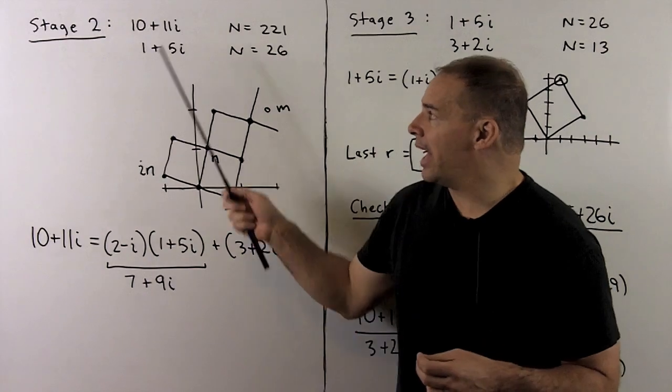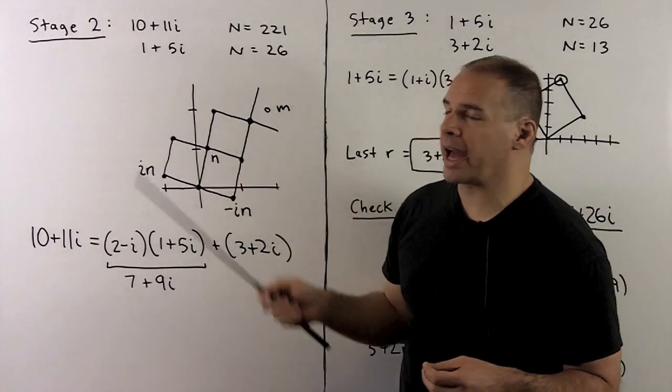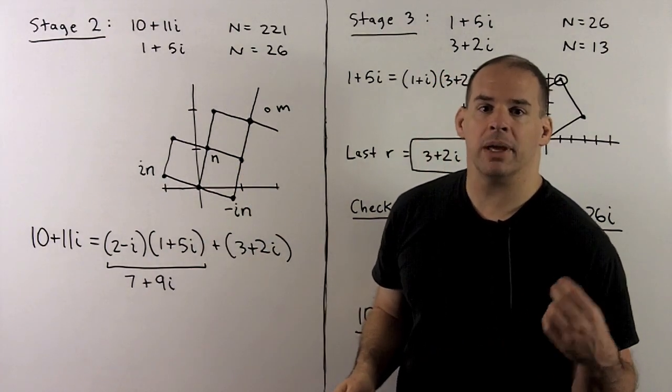Stage two, m is 10 plus 11i, n is 1 plus 5i. So the N's are 221 and 26.